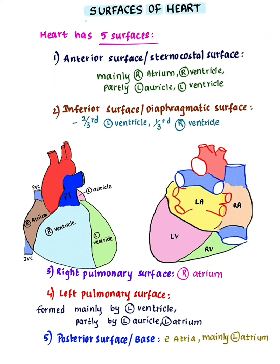In this video, we are going to learn about surfaces of heart. Heart has 5 surfaces: anterior surface or sternocostal surface, inferior surface or diaphragmatic surface, right pulmonary surface, left pulmonary surface, and posterior surface or base.